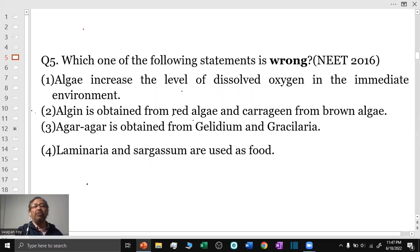Question 5: Which one of the following statements is wrong? Algae increases the level of dissolved oxygen in the immediate environment. It is true because algae are photosynthetic autotrophs and in the process of photosynthesis they produce oxygen.